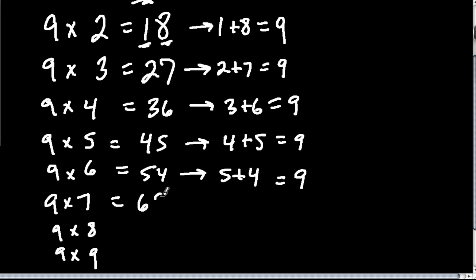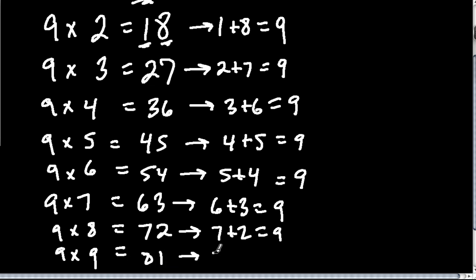9 times 7 is 63, and I know I'm right because 6 plus 3 equals 9. And then 9 times 8, well, it's 72, it's the only number in the 70s if we add two digits that we get 9, so it's 7 plus 2 or 9. And then 9 times 9 is 81, and 8 plus 1 is also 9, so I know that's correct. It's the only number in the 80s where the two digits equal 9.